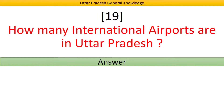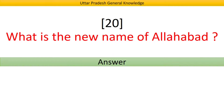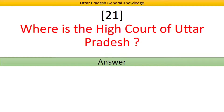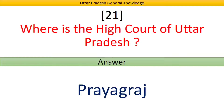How many international airports are in Uttar Pradesh? Answer: 2. What is the new name of Allahabad? Answer: Prayagraj. Where is the High Court of Uttar Pradesh? Answer: Prayagraj.